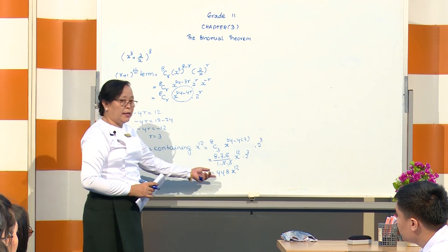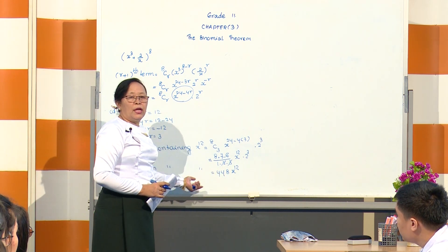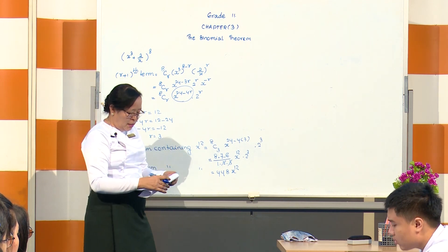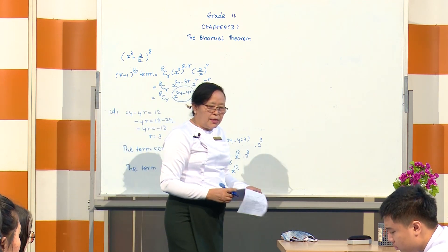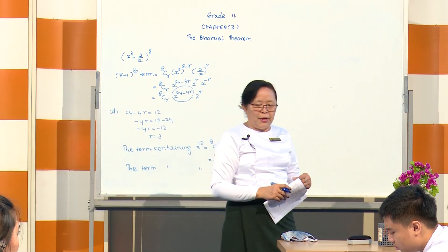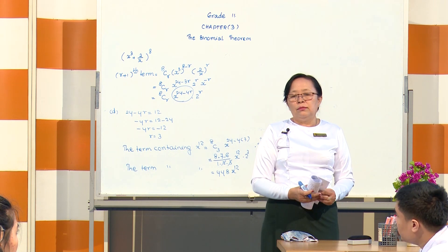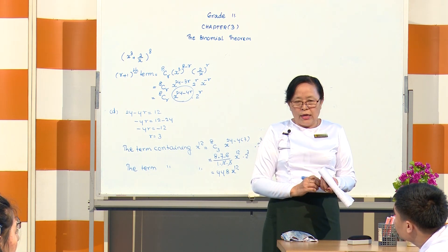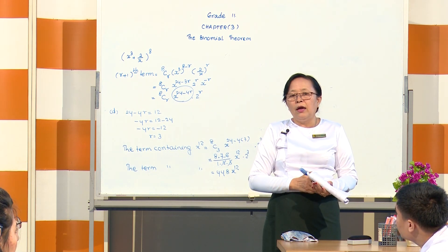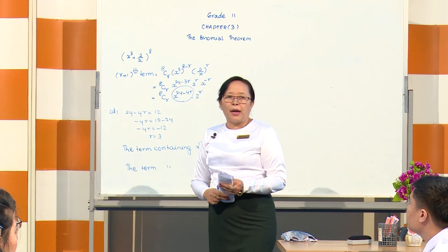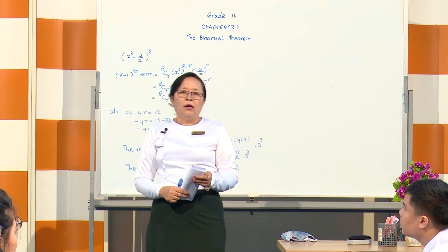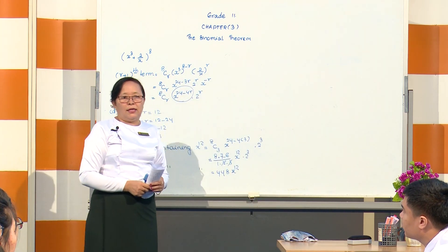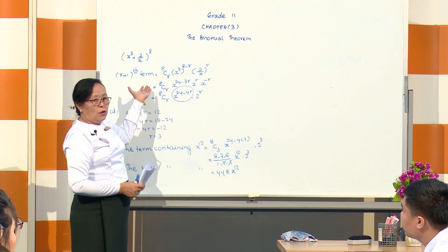This simplifies: 8C3 times 2 to the power 3 equals 56 times 8 equals 448. So the term containing x to the power 12 equals 448 x to the power 12.